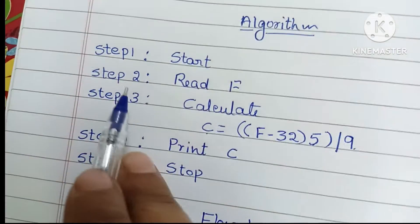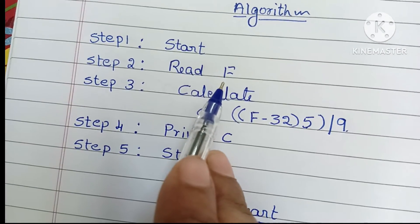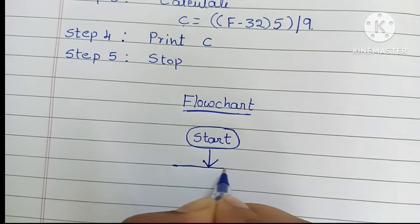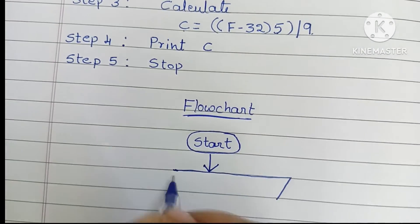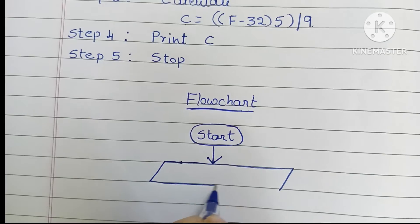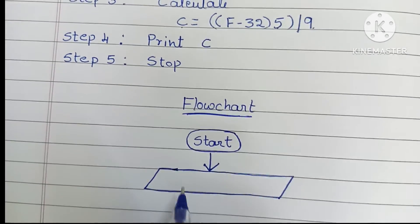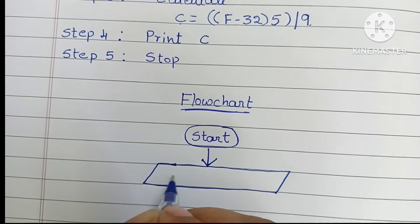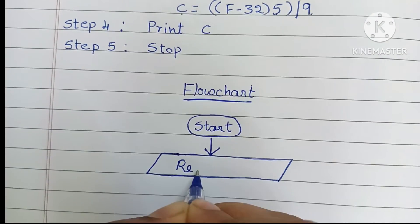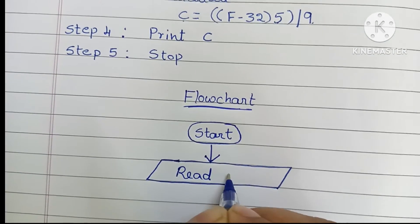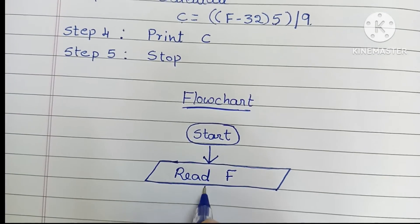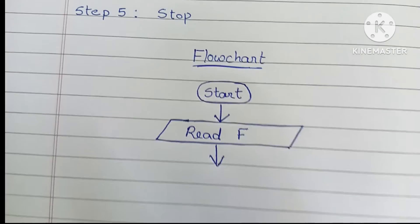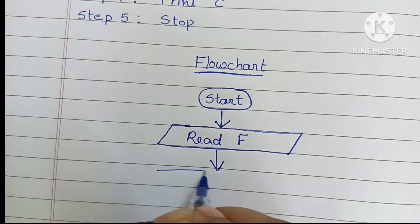Next, we have to read the input value. In step 2, we read the F value — the Fahrenheit value. In a flowchart, input and output values are always written within a parallelogram shape, so we draw a parallelogram and write Read F inside it.